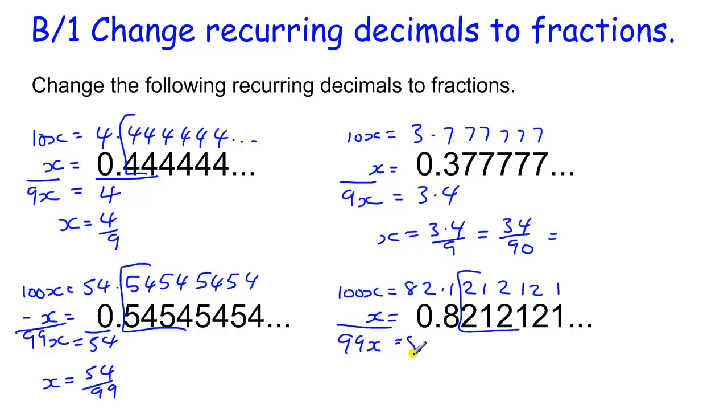Take those two away, and we're going to get 81.3. And so x equals 81.3 over 99. To make it a proper fraction, we times by 10. And if we can, we cancel, but I don't think we can there. And that's it.